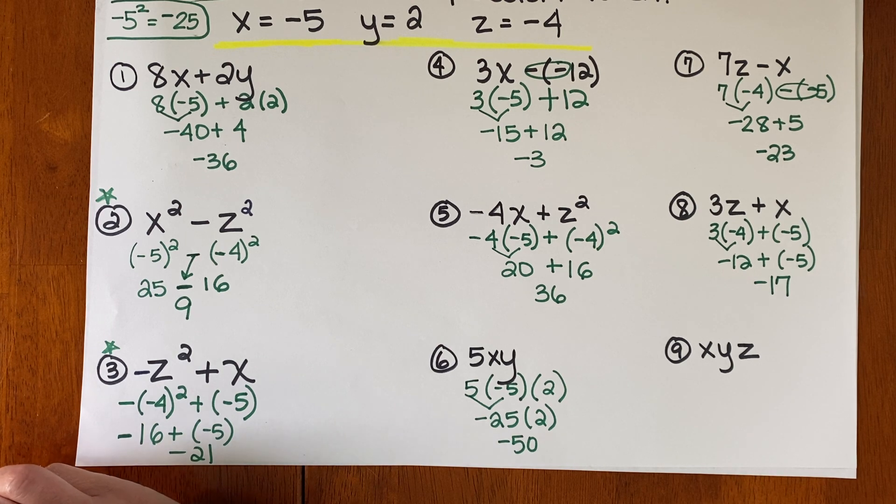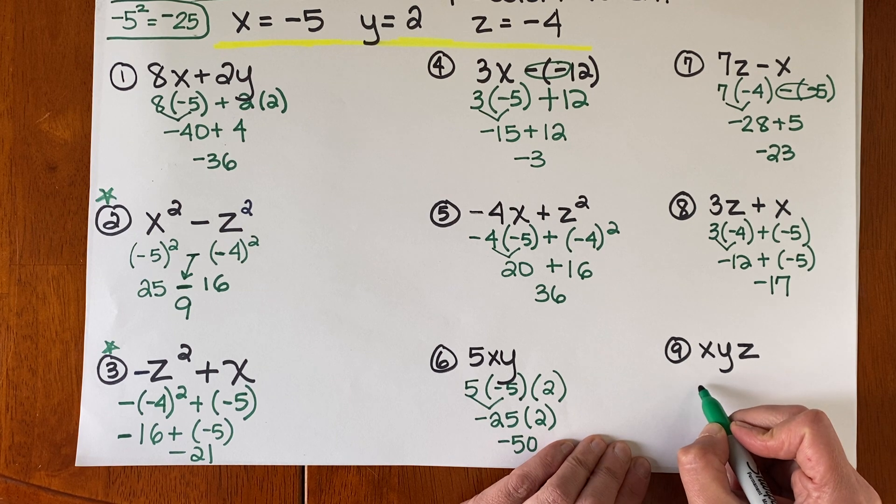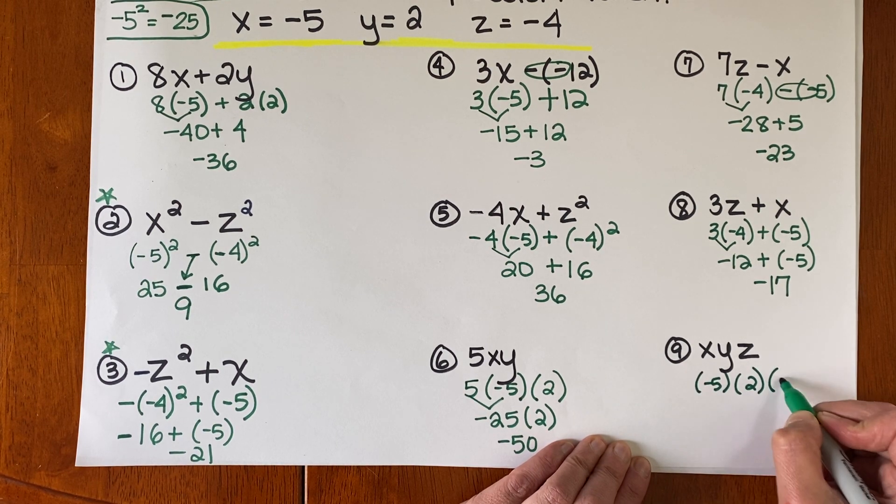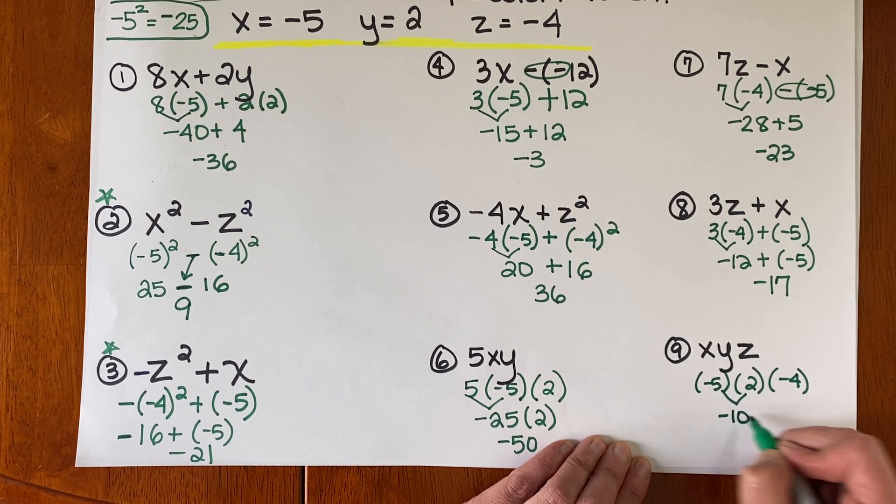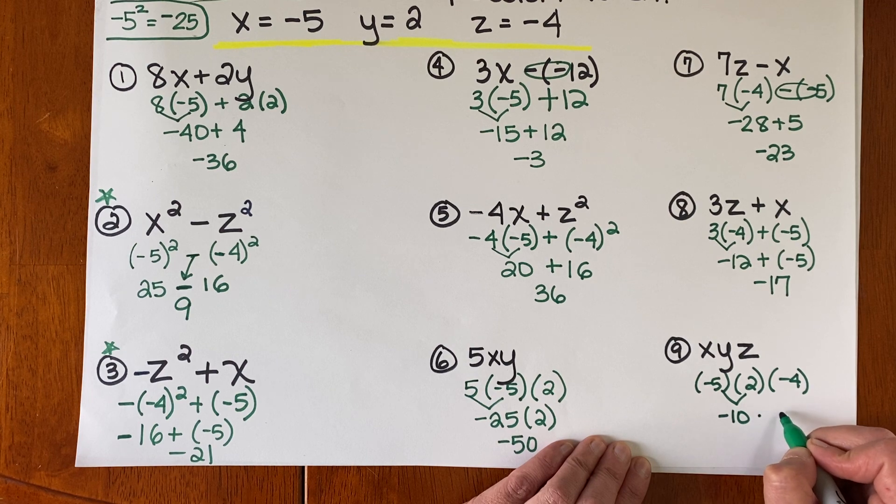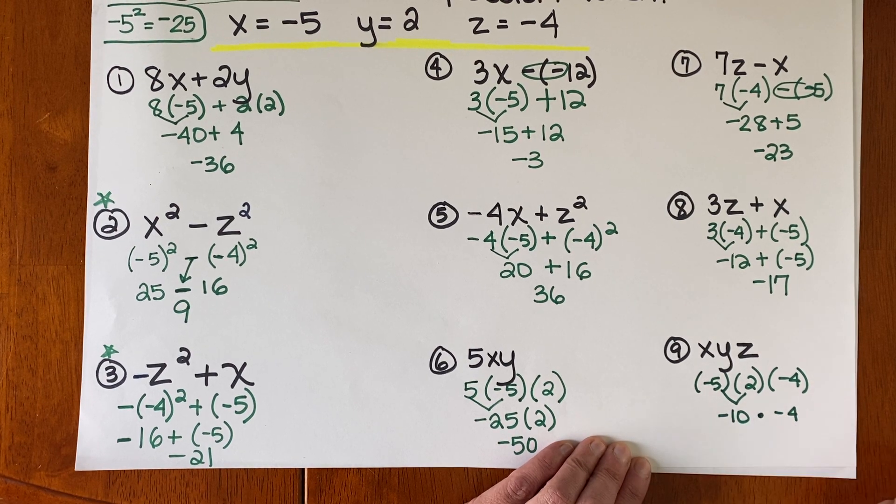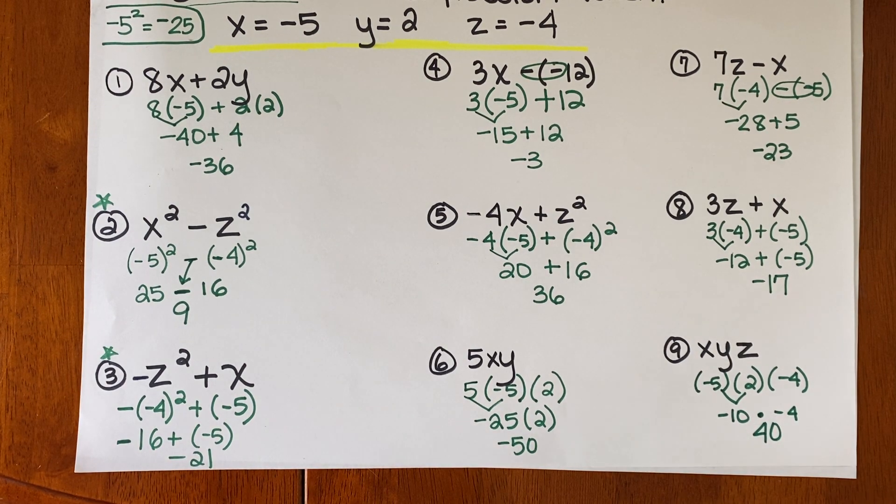And last, X times Y times Z. X is negative 5, times Y is 2, times Z is negative 4. 5 times 2 is 10, times the negative, times negative 4. Or you could put parentheses there. Just know that you multiply. My answer is a positive 40.